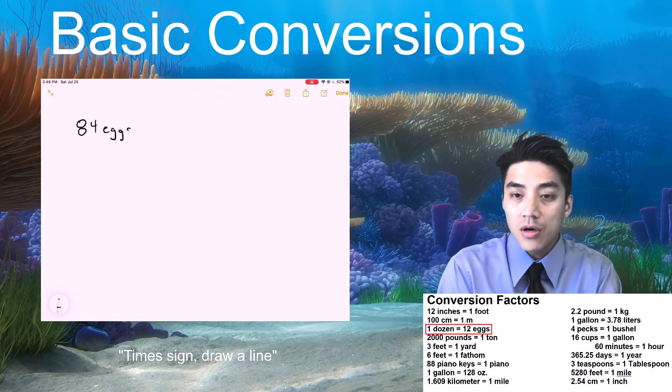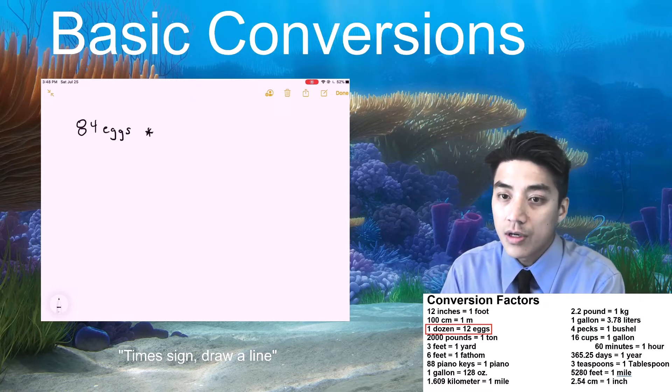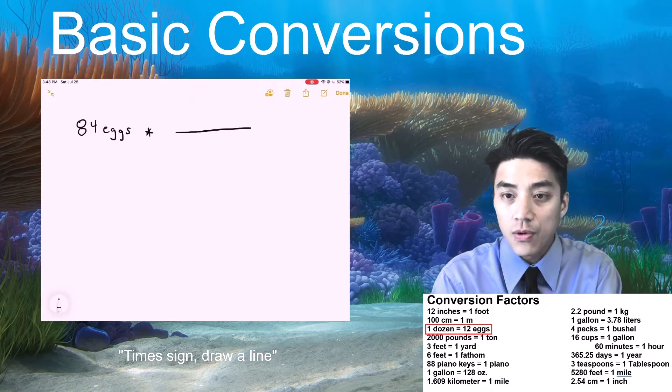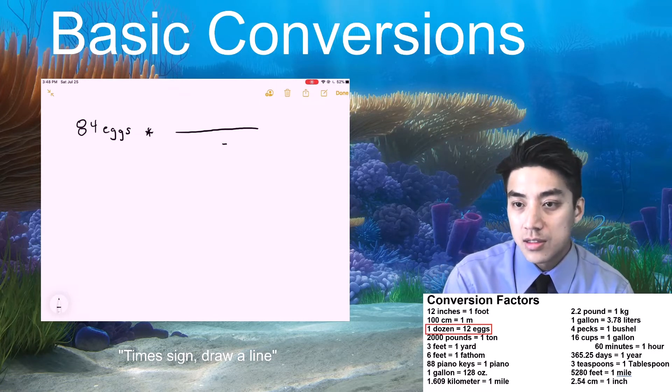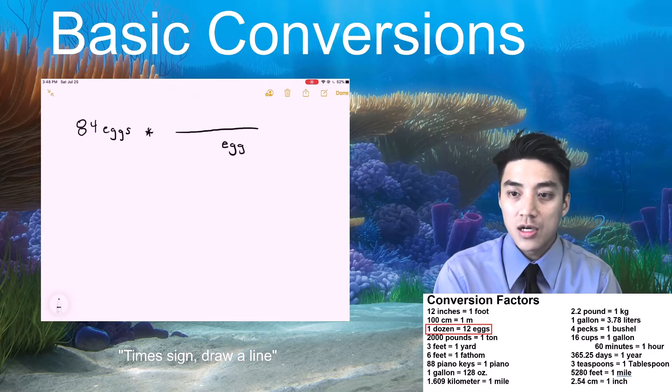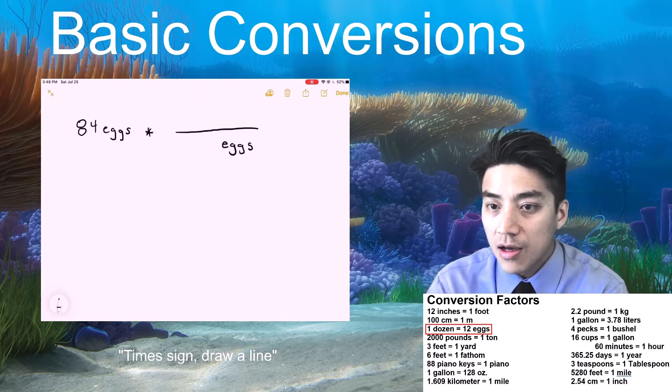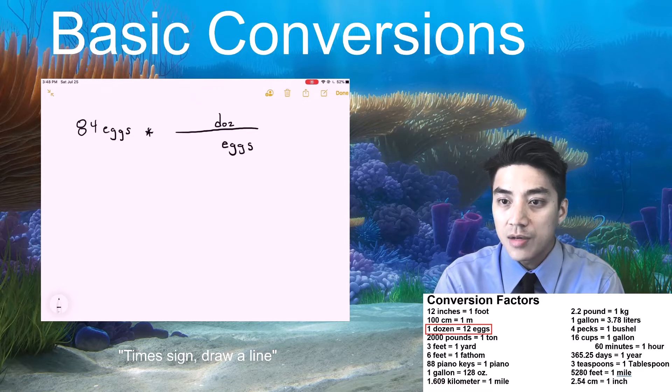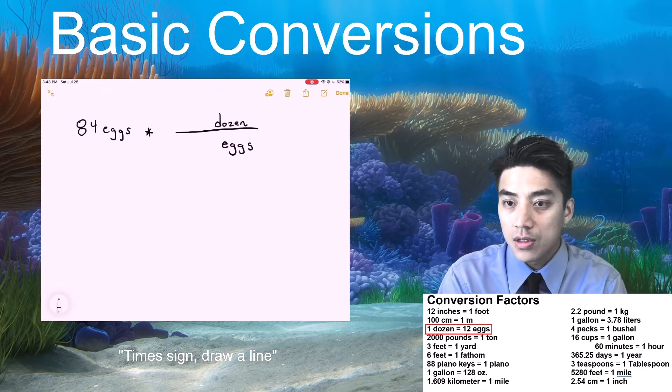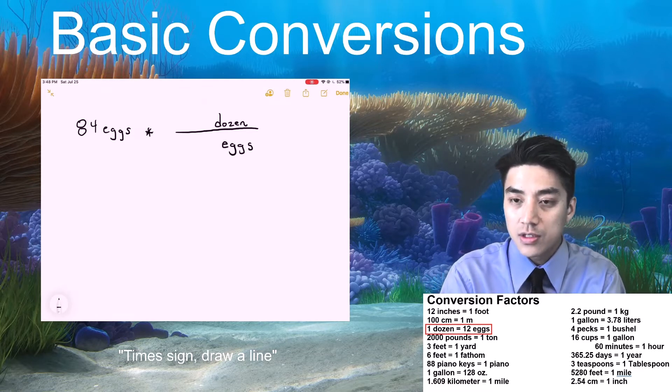This is how you should do every single problem. So start by writing down what you're given. You know that you have 84 eggs. And then you go time sign, draw a line. It's a small rhyme that we came up with to help you remember this. And then on the bottom, I'm going to write eggs, because I want that to cancel. And then on top, we'll write the word dozen, because I want to convert to dozen.